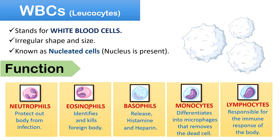Basophils have a bilobed nucleus and dark blue or purple colored granules in the cytoplasm. Basophils release histamine and heparin, where histamine increases tissue blood flow and mediates the inflammatory response, while heparin acts as an anticoagulant.